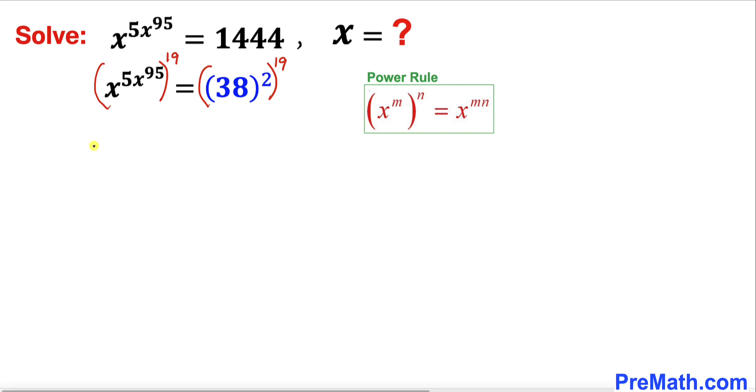So the left hand side could be written as x power 19 times 5, x power 95, equals to on the right hand side 38 power 2 times 19, which is 38. Now let's multiply 19 times 5. So therefore left hand side could be written as x power 95, x power 95, equals to 38 power 38.